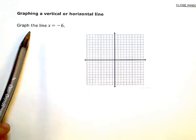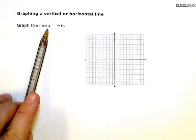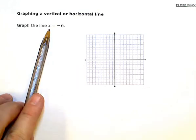Now, whenever you're graphing a line on a coordinate plane, if your equation has both x and y in it, an x and a y, then your line will always be slanted somehow.